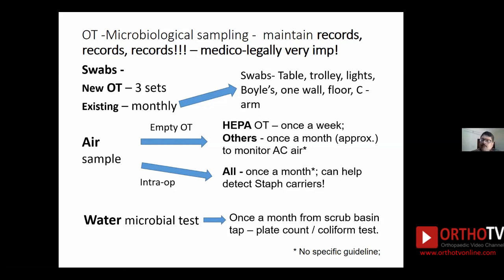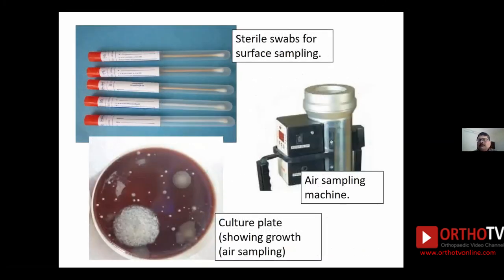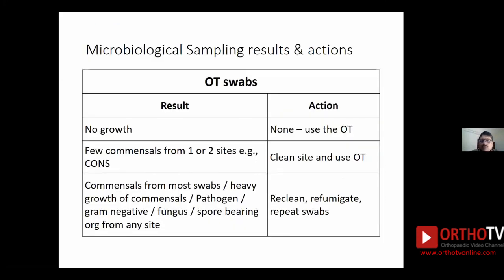The ideal water test is a plate count, in which the number of colony-forming units per ml is known and the type of organisms can be identified. If that is not available, you can go for the coliform test, which detects mainly coliforms but has that limitation. Records of all microbiological testing have to be maintained by every theater — remember the medico-legal importance, and this will also tell you how effective your cleaning and disinfection is.